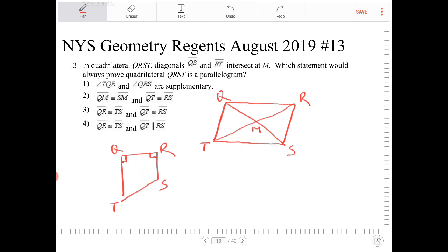Option three, QR congruent to TS and QT congruent to RS. Yes, that would work. QR congruent to TS, so opposite sides are congruent. Yeah, that would work. Option three.